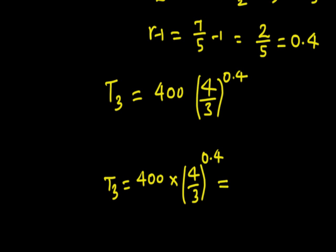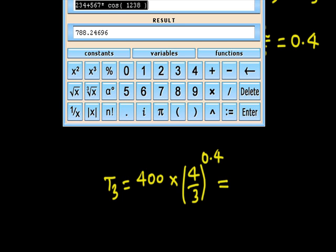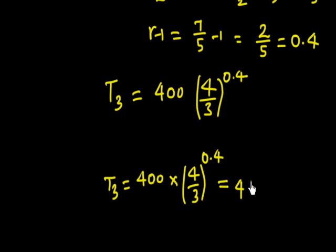Calculating this value: T3 = 400 × (4/3)^0.4 = 448.78 Kelvin. So the new equilibrium temperature after the adiabatic compression back to the original height is approximately 448.78 Kelvin.